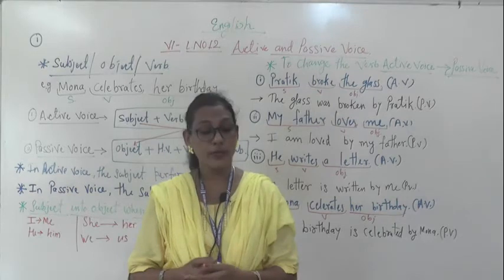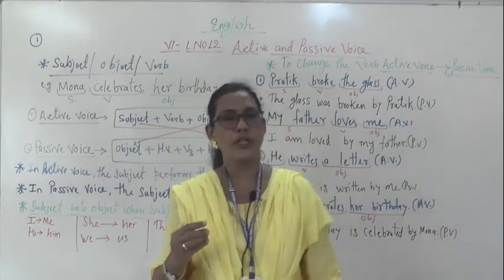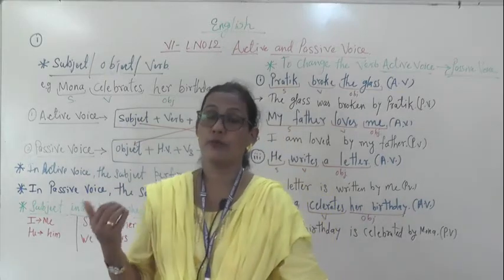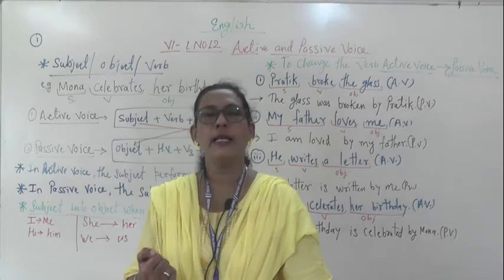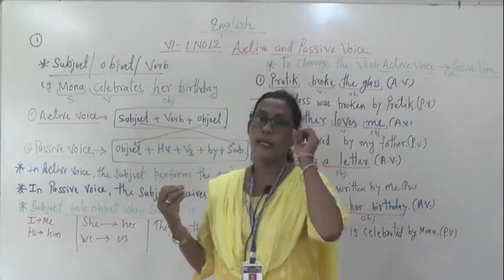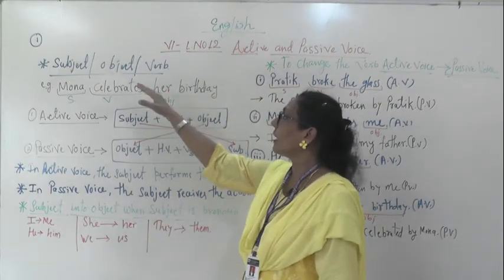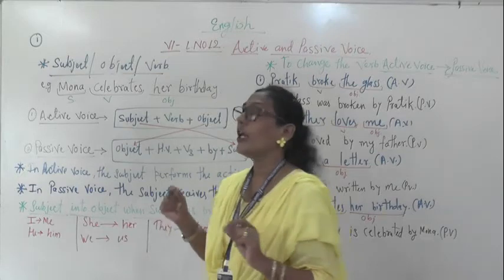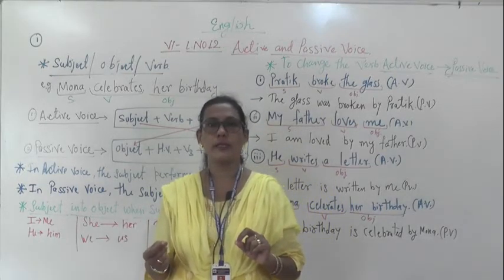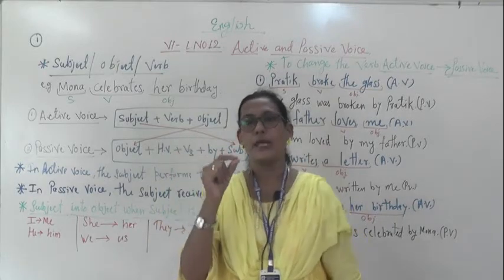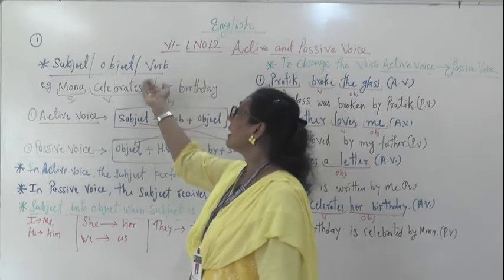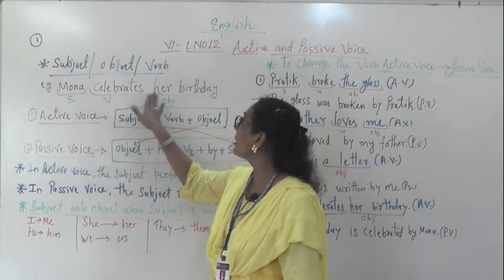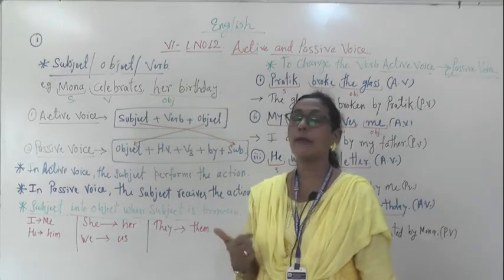Before we start this lesson, we must understand what is subject, object, and verb. We have already learned in the previous lesson what is subject, what is verb, and what is object. Subject means a naming word in that sentence — the noun is the subject. Verb is an action word. The remaining part of the sentence is called the object. Let's see one example: 'Mona celebrates her birthday.'